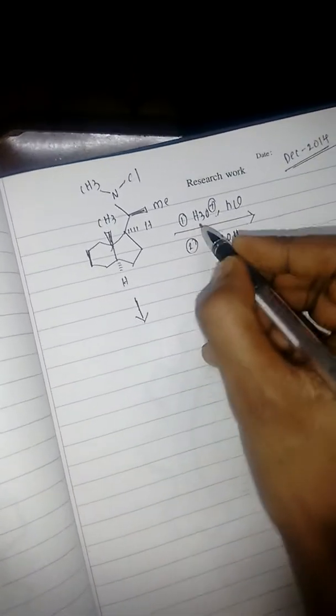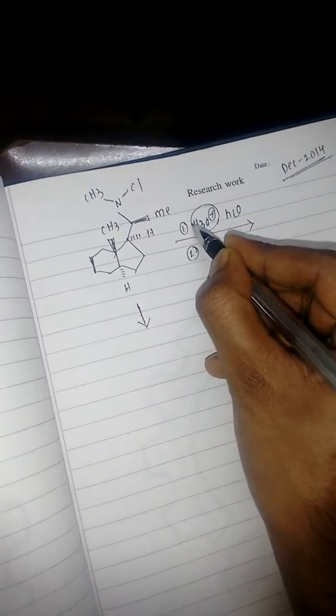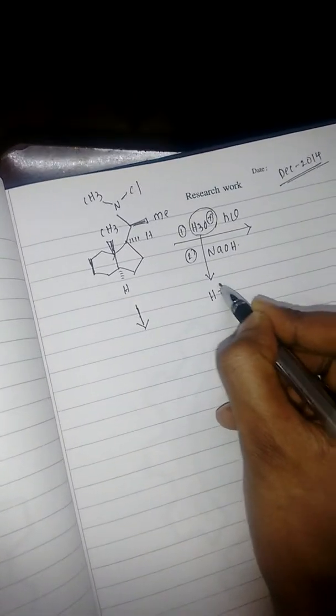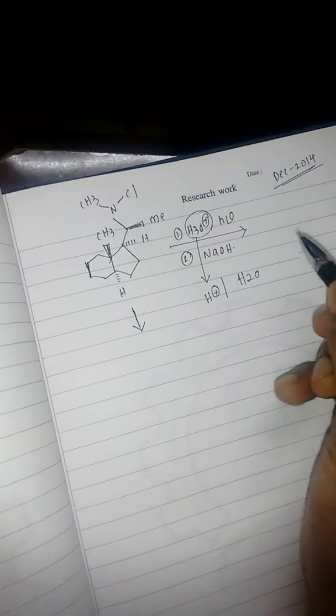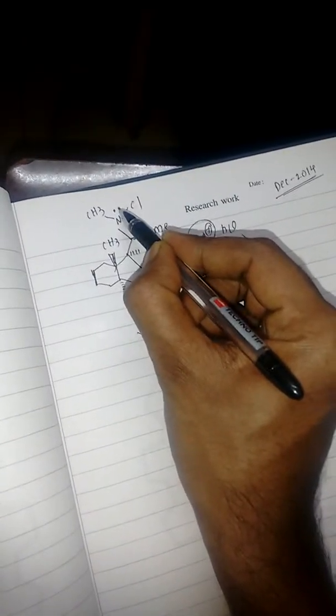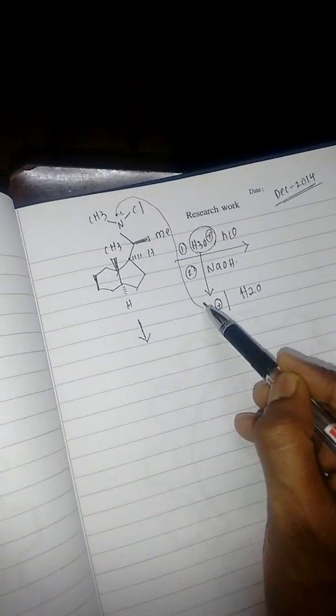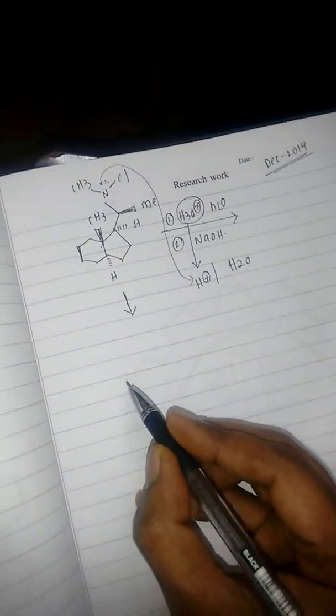In the first step they have given H3O+, so this is a source for H+. The lone pair which is present on the nitrogen will abstract this hydrogen.